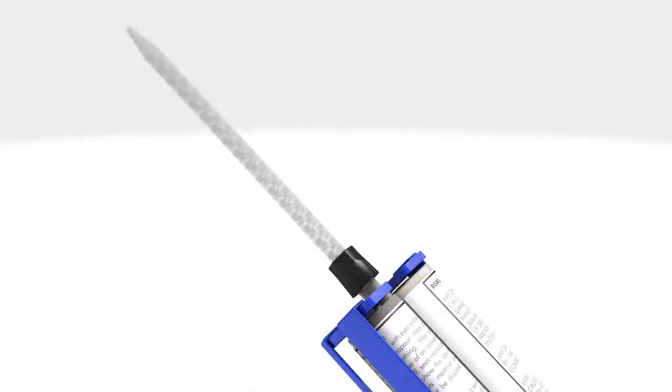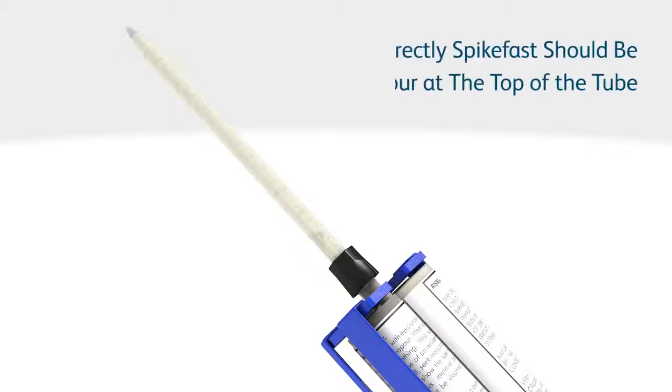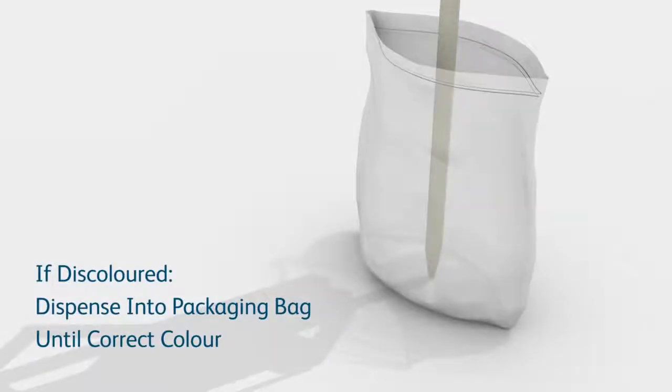Start pumping the material into the mixing tube, ensuring the brown hardener and coloured resin are fully mixed together. When mixed correctly, SpikeFast should be of an even consistency at the top of the mixing tube with no discolouring. If there is any discolouring, point the cartridge down and dispense the discoloured SpikeFast into the plastic packaging bag until you have the correct mix.